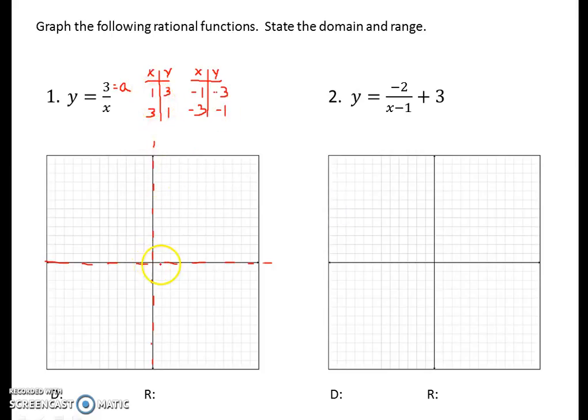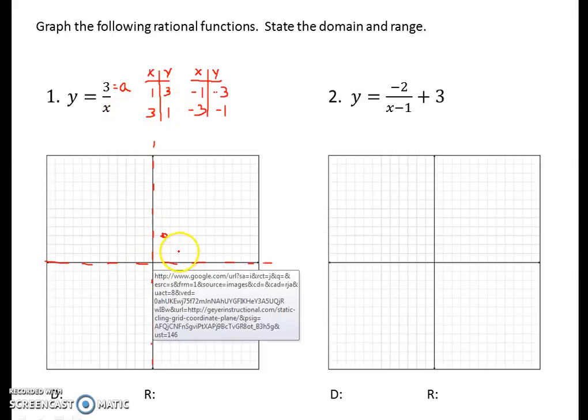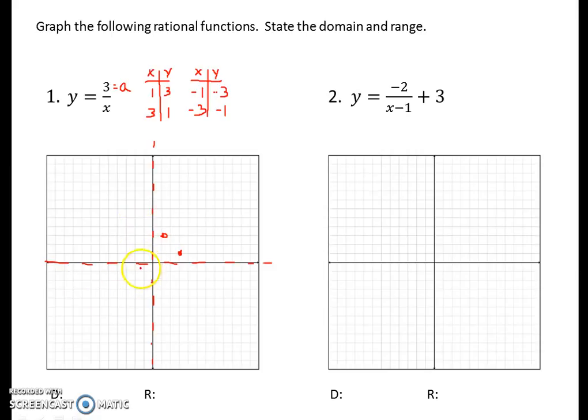I'm going to plot these points now: over 1 up 3, over 3 up 1, then left 1 down 3, and left 3 down 1. I've got to be careful—I want to draw a nice continuous line approaching the asymptotes each way. So it's going to go up like that, come down and approach the horizontal asymptote. So there's one of my branches.